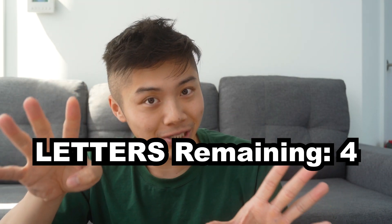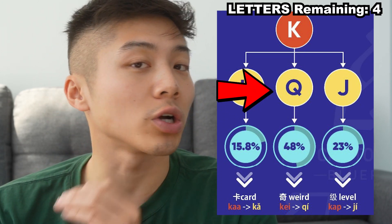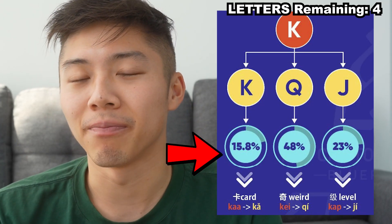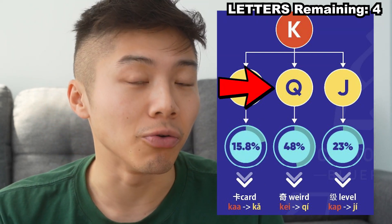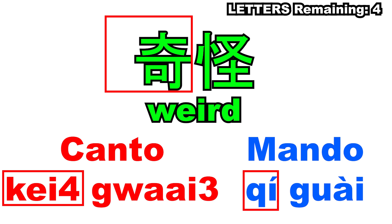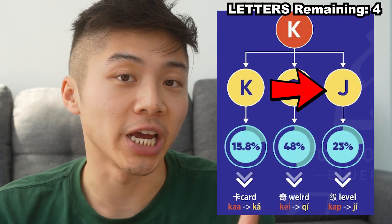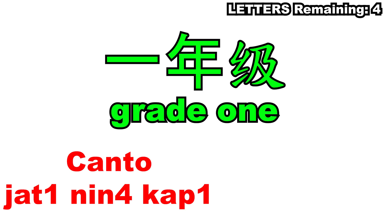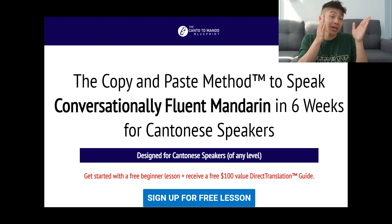Alright guys, we're almost there — there aren't that many initials in Chinese. By the way, if you're writing all this out, you don't need to. We actually have this flow chart available in the link in the description box below. It's part of our course, but we're giving it to you for free. Our course helps Cantonese speakers leverage their Cantonese knowledge — at any level — to learn Mandarin. Just check out the course in the link below — it helps us out a lot, and you'll get this flow chart for free.